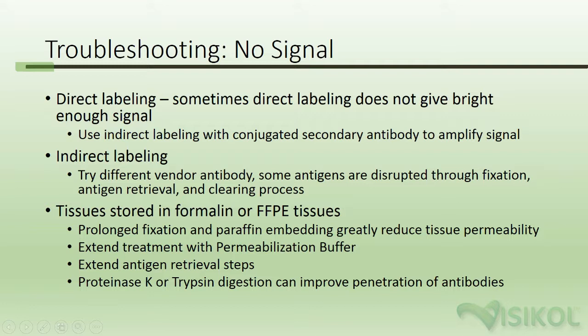If you see no signal and you're working with tissues that have been stored in formalin or FFPE tissues, the problem is likely due to prolonged fixation. Prolonged fixation can greatly reduce tissue permeability and will often yield tissues that are inaccessible to antibody labeling. The solution is to extend treatment with the permeabilization buffer as well as antigen retrieval steps. A more drastic solution is to obtain proteinase K or trypsin to digest the proteins, which can improve penetration of antibodies to the deeper layers.